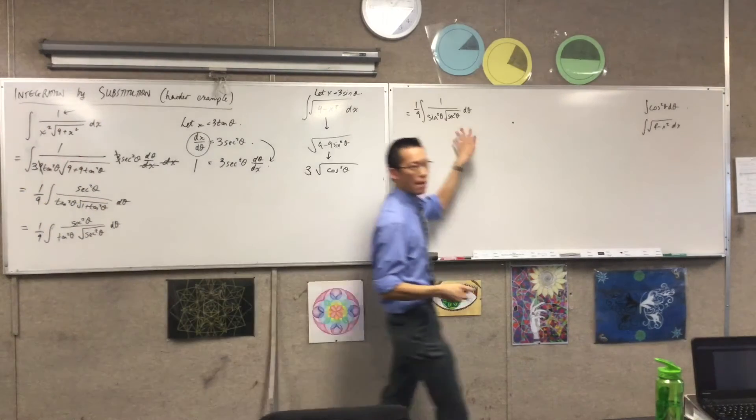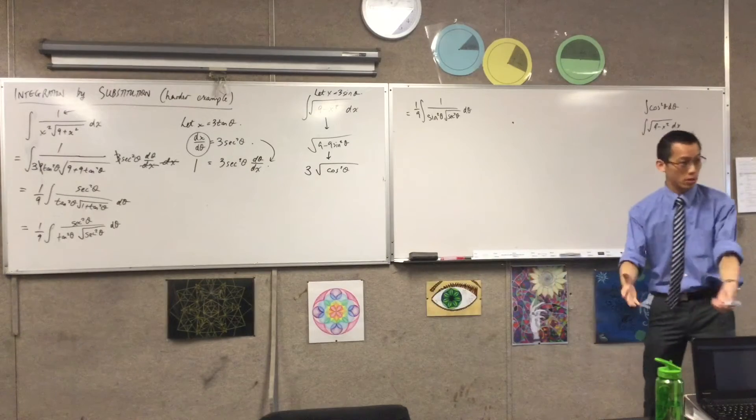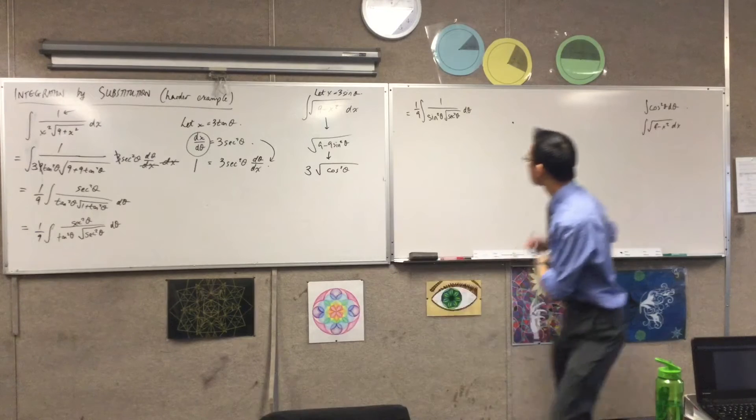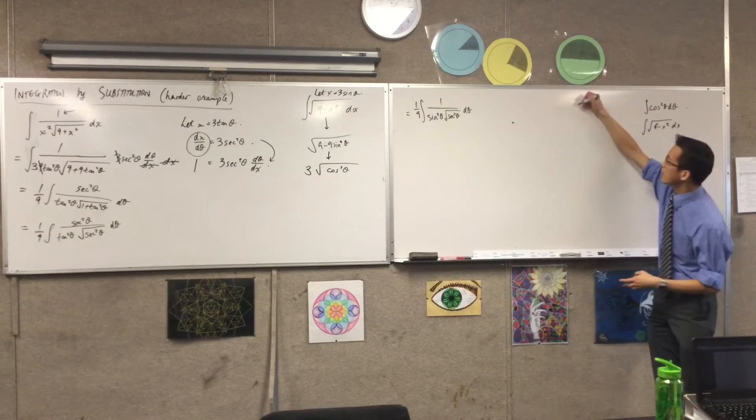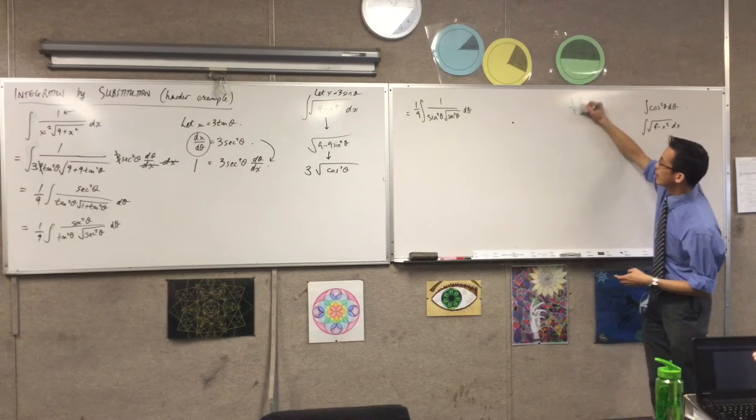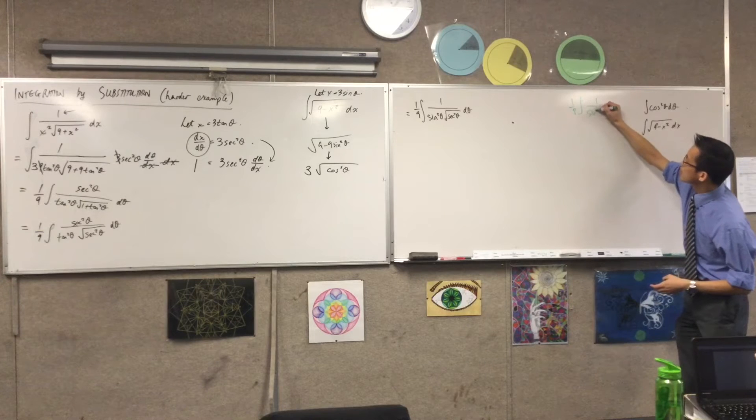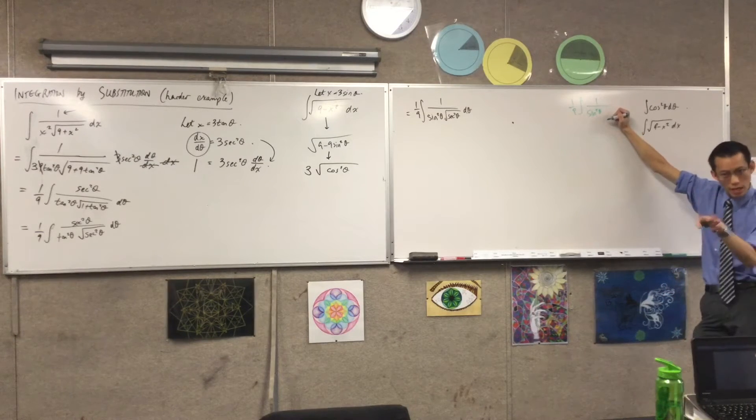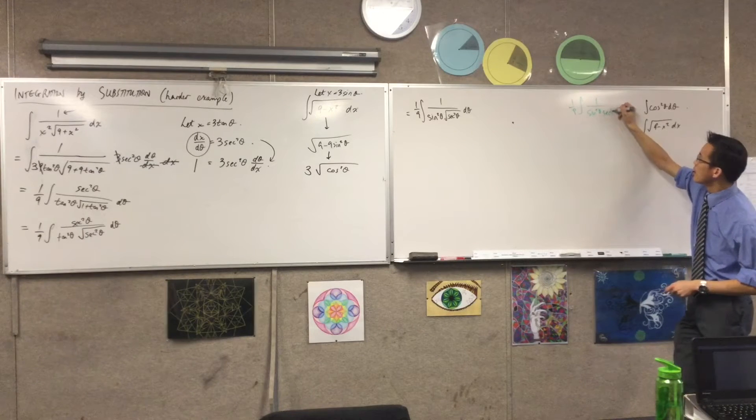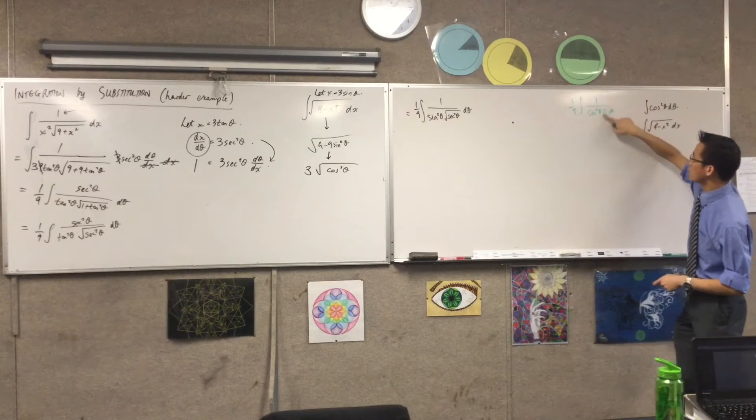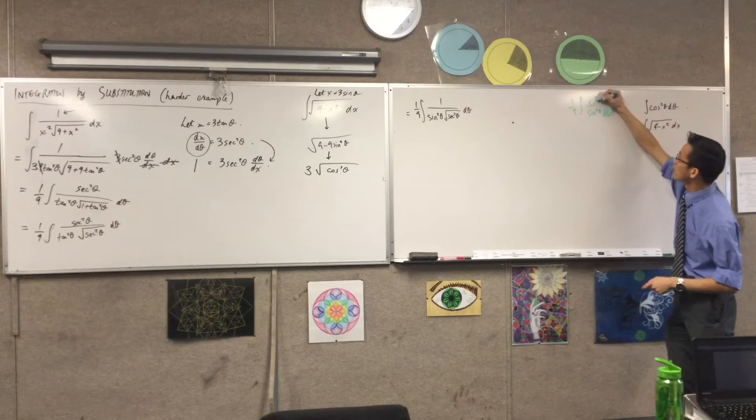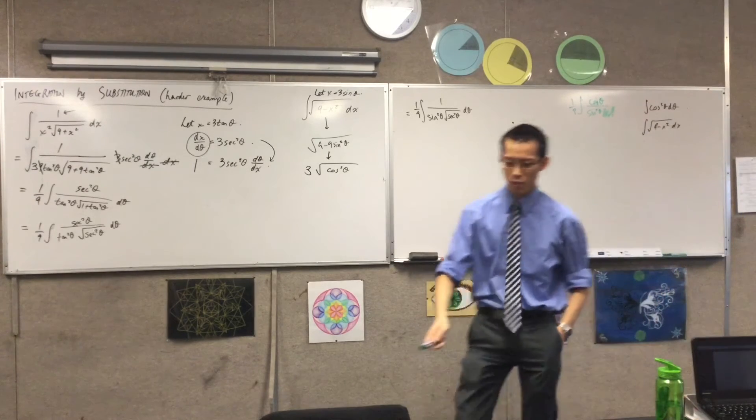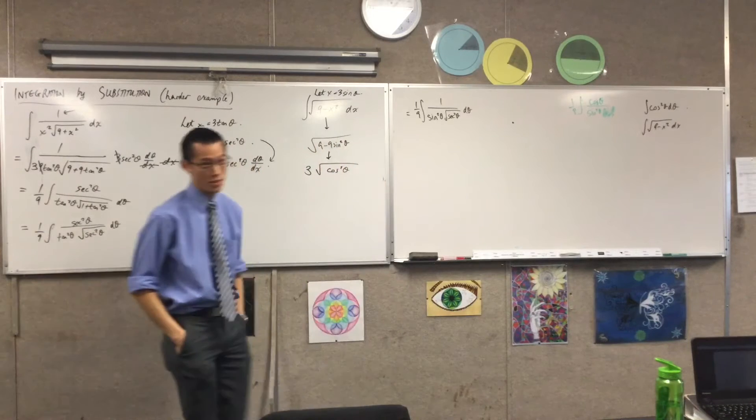But then, imagine what would happen if I just took the positive case. Let's just, for the sake of argument, look at it over here. If I just take the positive case, this is going to be 1 over 9, 1 on sine squared. What will that become? I'm just taking the positive part, which is sec theta. And that sec theta is really actually a cos theta up here. Are you okay with that?